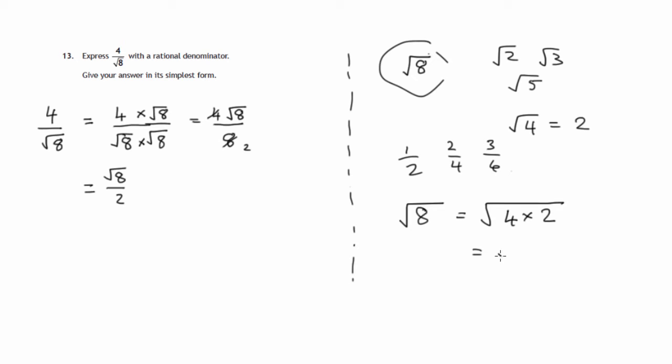2 times root 2. That's simplified in the sense that the number that's under the square root sign is the smallest possible.